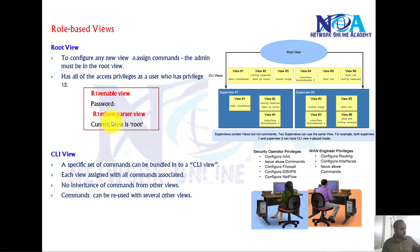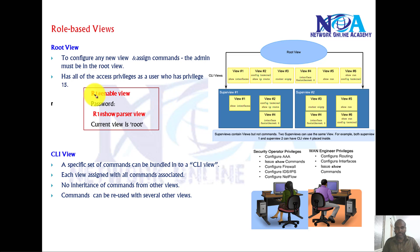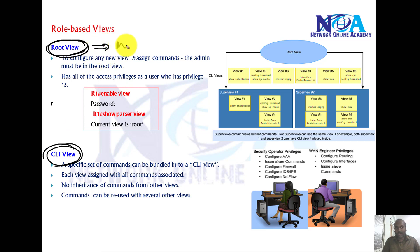In this section we'll try to understand the different types of views and what they do. Before we assign any specific commands we need to create the views. Unlike privilege levels we don't have any limitations. Mainly there are two views called root view and CLI view. Root view is just like a master view where we can make all the changes, just like privilege level 15.